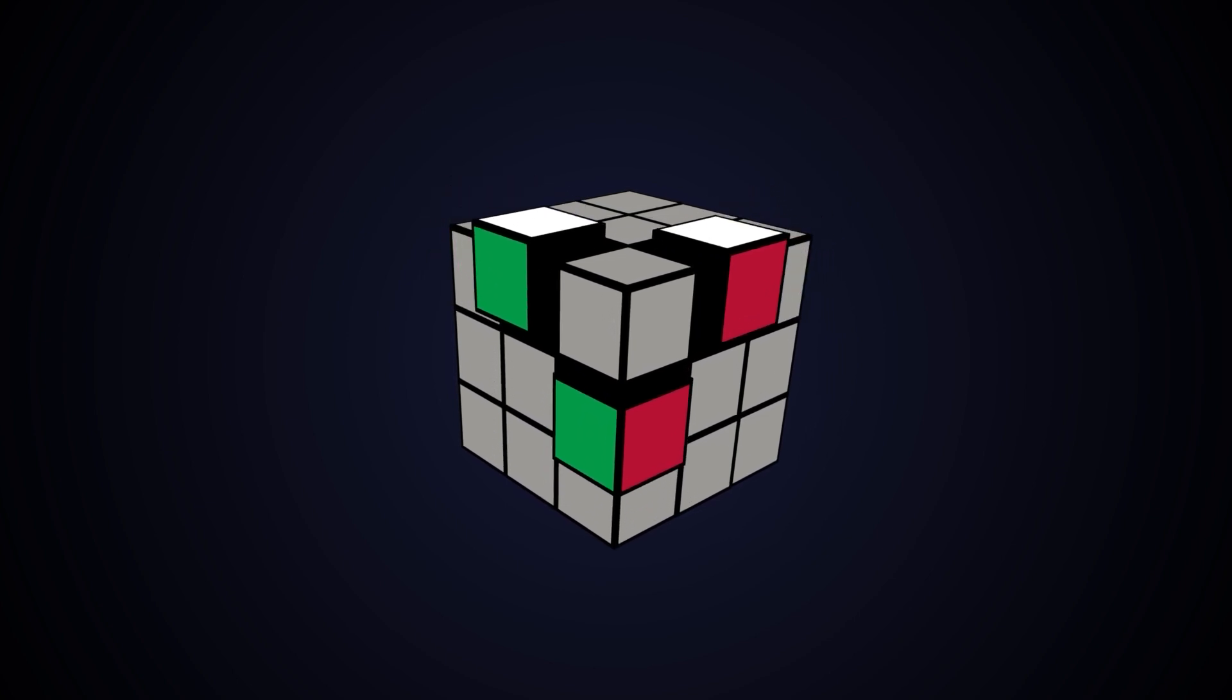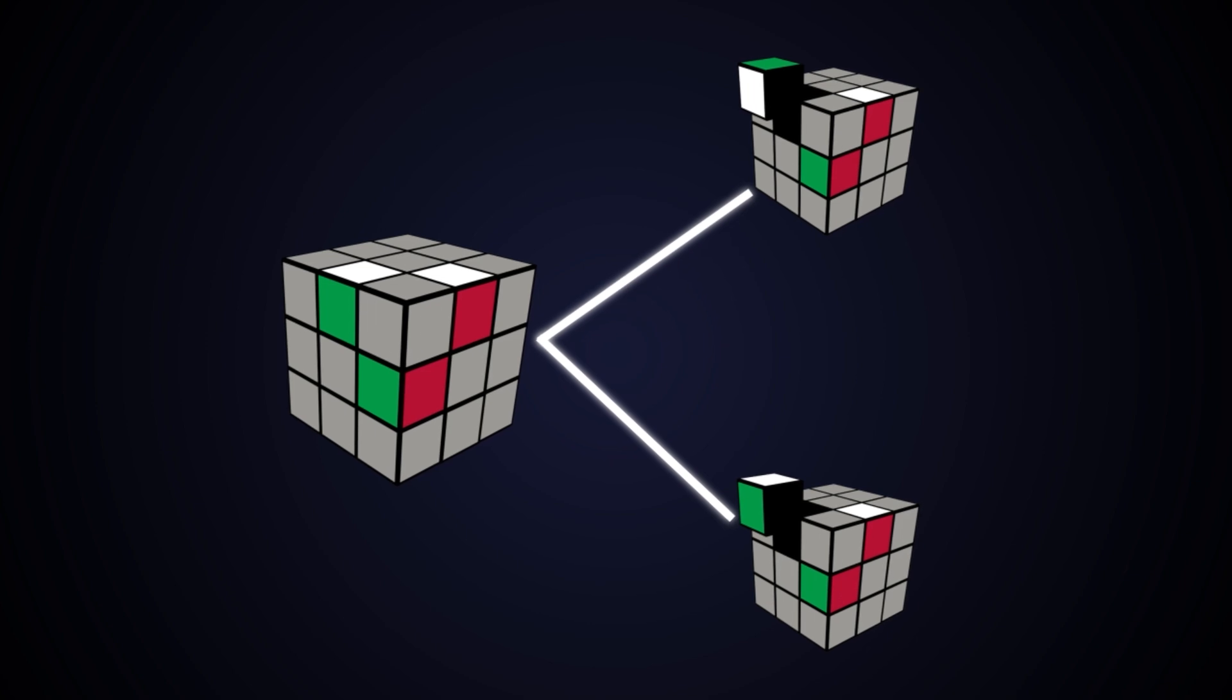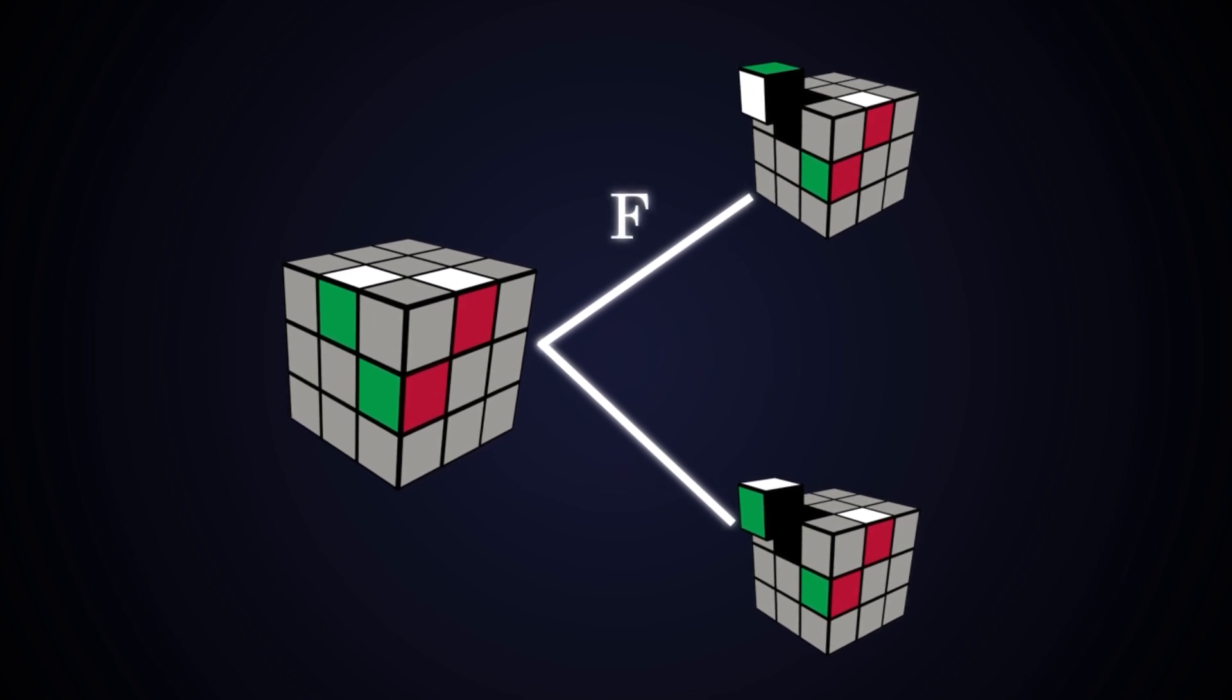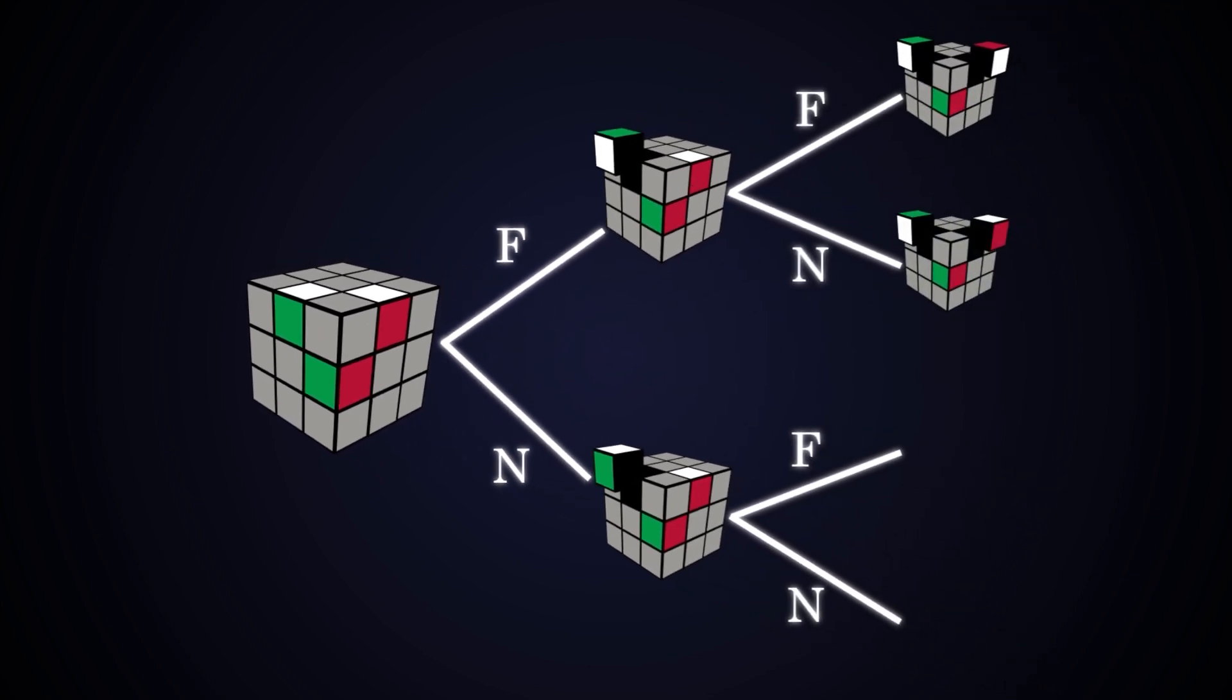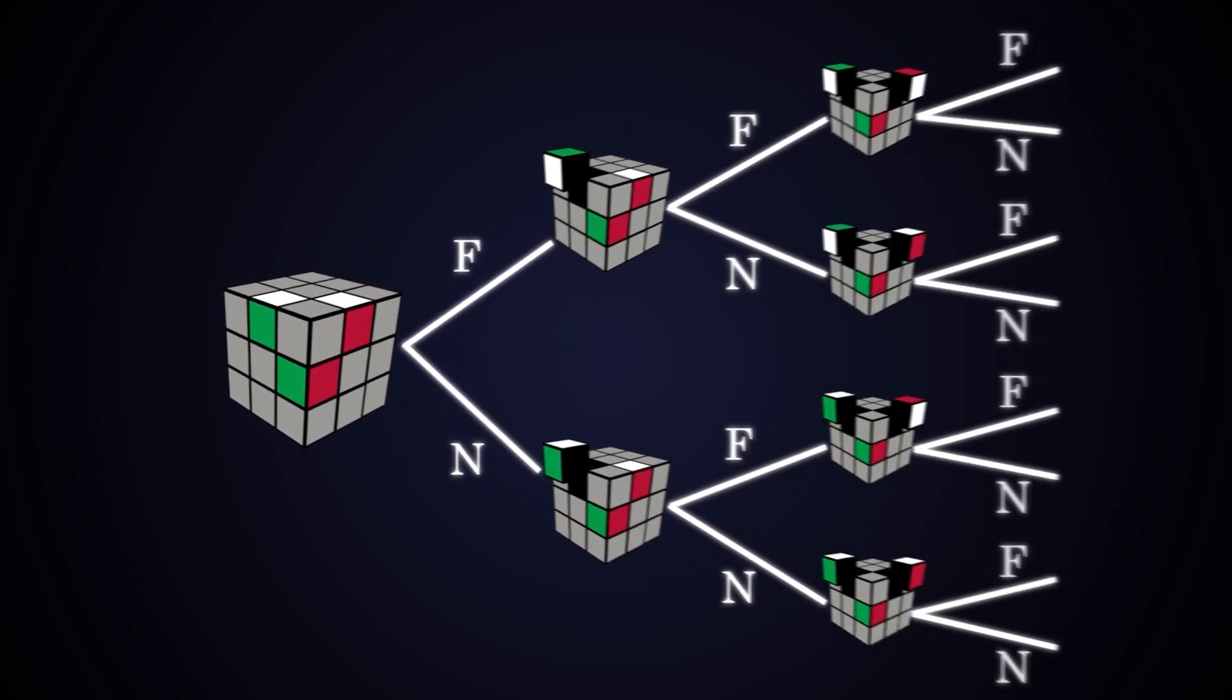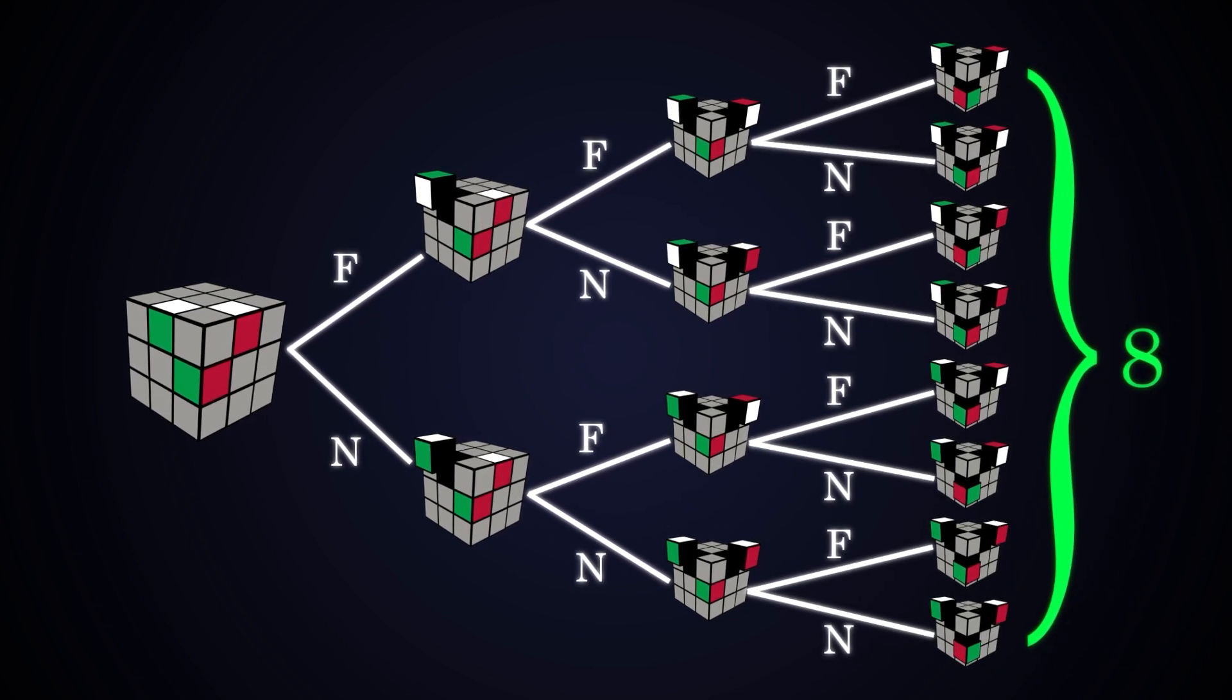What about for three edges? Well, here things get a bit more complicated. First we choose whether or not we flip the first edge—I'll use F to indicate flip and N for no flip. Then whether or not we flip the second edge, then the third, and out of these you'll see there's eight possible combinations.